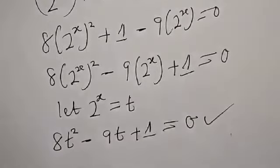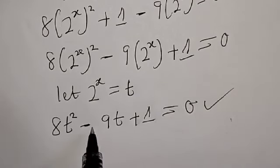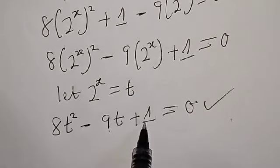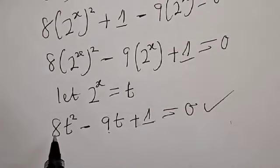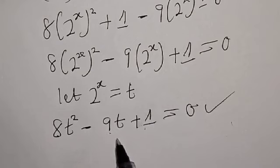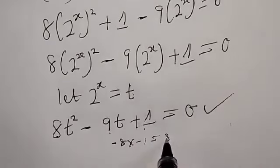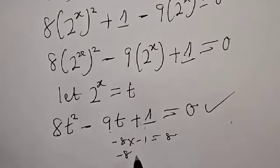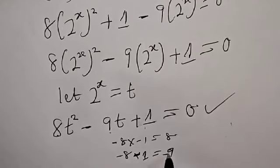This is a quadratic equation. The coefficient of t squared is 8, the coefficient of t is 9, and the constant is 1. We are going to use the factorization method. We have 8 times 1, that is 8. We find two numbers such that their product equals positive 8 and their sum equals minus 9. Minus 8 multiplied by minus 1 equals 8, and minus 8 plus minus 1 equals minus 9.